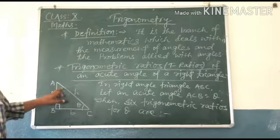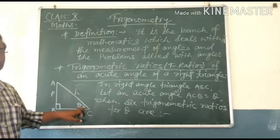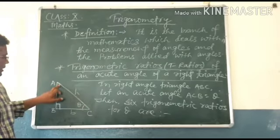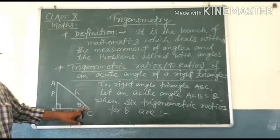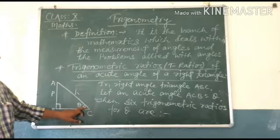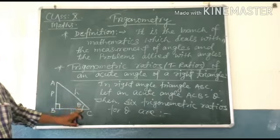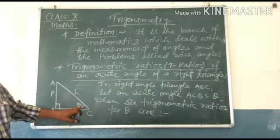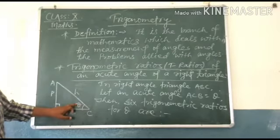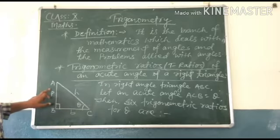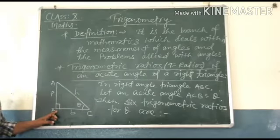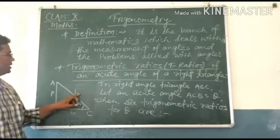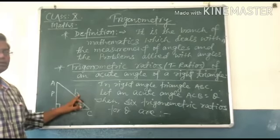In right angle triangle there are two acute angles. Here are angle A and angle C. Both are acute angles, but I have taken angle C as theta. And if angle C is taken, then its opposite side is AB. Then you can say that P is the perpendicular, B is the base, and AC is the hypotenuse.